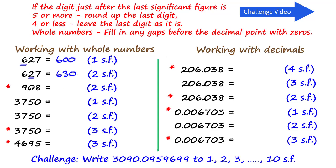908 to two significant figures is of special interest: 9 is the first significant figure, and we do count the zero as our second significant figure. Applying the rules, the next digit is an 8 — it's 5 or more — so we add 1 to the zero. It becomes 1, and we carry that to get 91, then fill back one place with a zero to give 910. So 908 is closer to 910.